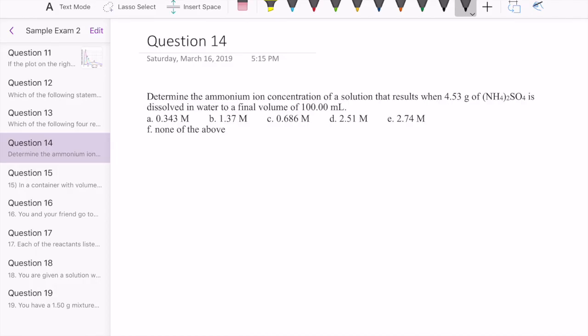Okay, let's take a look at sample exam 2, Chem 11, number 14. This question asks us to determine the ion concentration, specifically ammonium ion, from a solution that's made by putting 4.53 grams of ammonium sulfate into water at 100 milliliters.